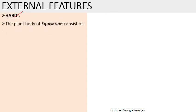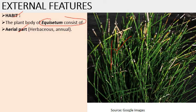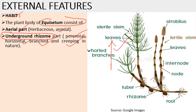Regarding external features and habit: the Equisetum plant is bushy, herbaceous, and perennial, differentiated into true root and stem. The plant body consists of an aerial part which is herbaceous and annual, and a second part which is the underground rhizome that is perennial. The rhizome is horizontal, branched, and creeping.